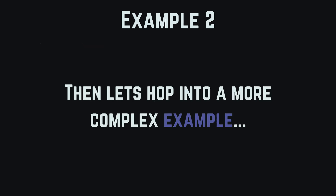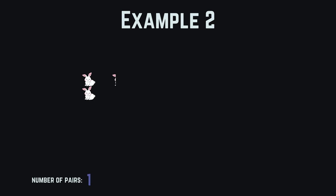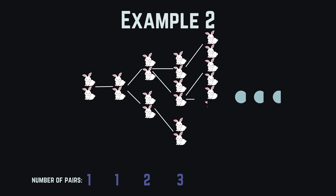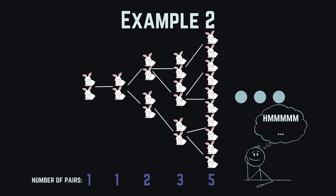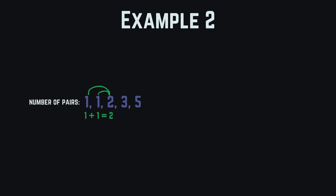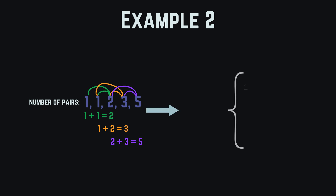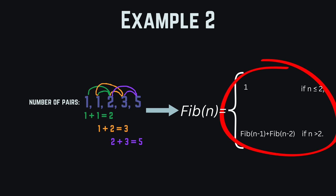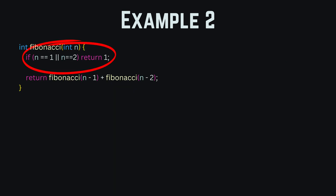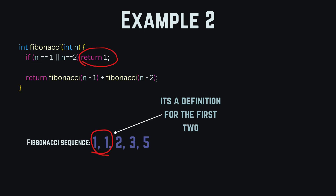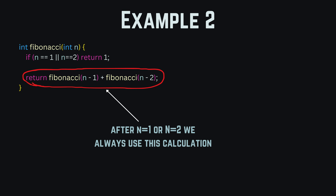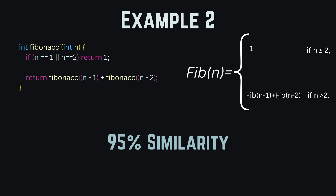Let's hop into a more complex example called the Fibonacci sequence. The history behind it is that it was apparently used to describe the population growth of rabbits. If we look at the sequence, we can see a pattern: the next number in the Fibonacci sequence is always built from the two previous numbers, which we can write as the mathematical expression F(n) = F(n-1) + F(n-2). This is already a recursive expression we can translate into code. When we hit our base case for n equals 1 or n equals 2, we return 1. In any other case, we calculate the value using the two values prior to n, nearly straight from our mathematical expression.